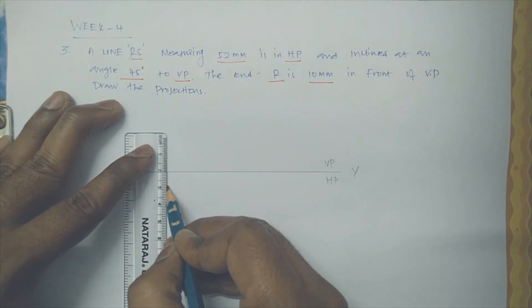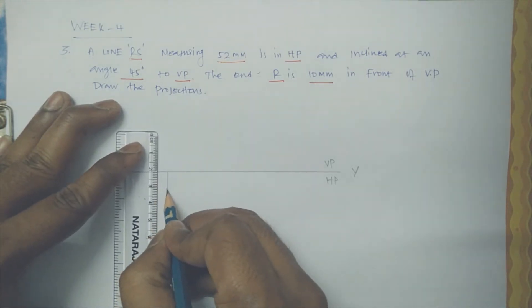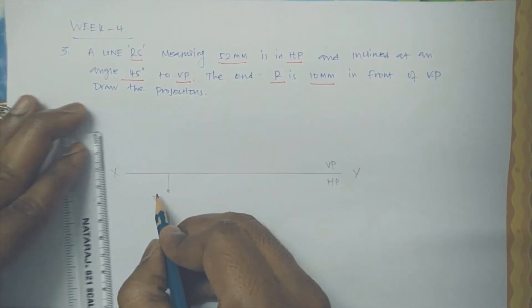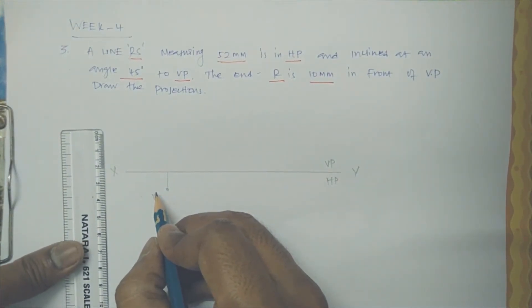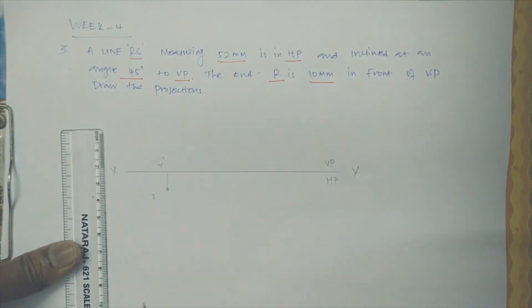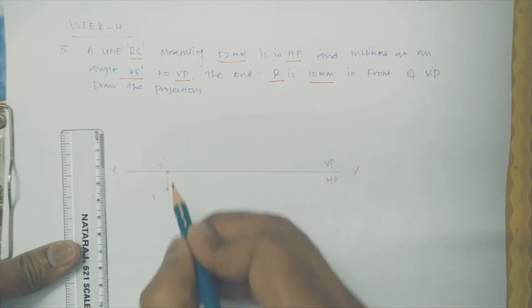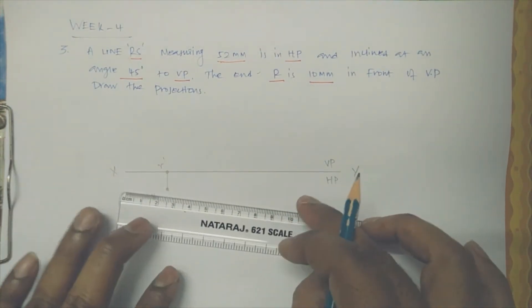VP and HP. So what they have shown, the position R, it is 10mm in front of VP, so it will be here. So that is R. You are rotating it, it is in the horizontal plane, this is in the vertical plane. So R, R dash.